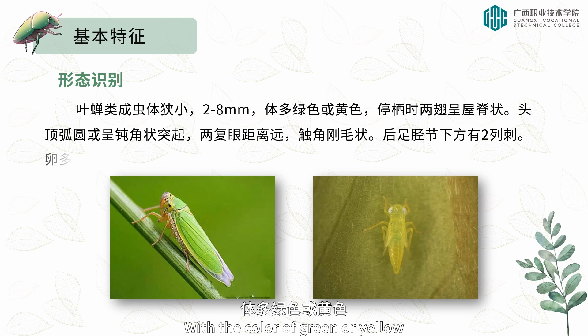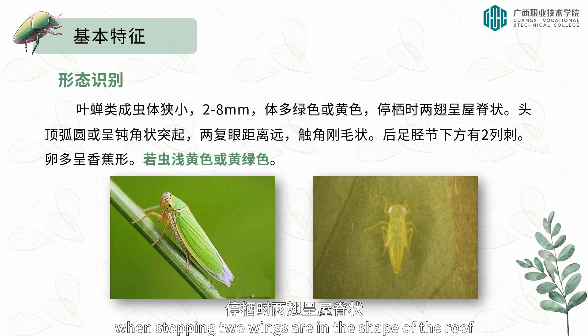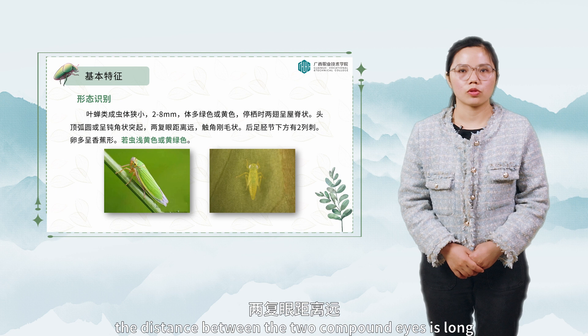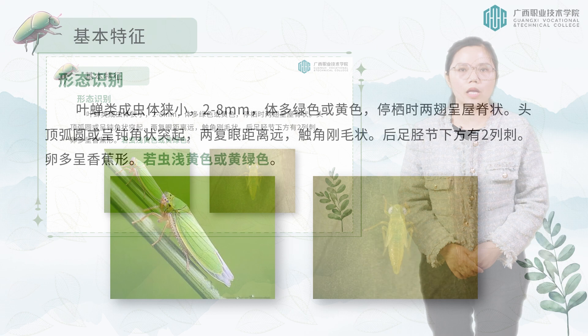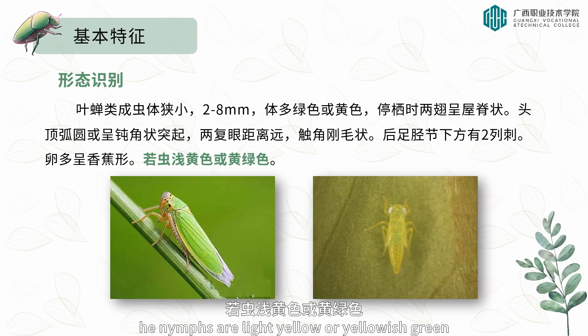The leafhopper adult's body is narrow, only two to eight millimeters in length, with a color of green or yellow. When resting, the two wings are in the shape of a roof. The top of the head is curved or obtusely angled, and the distance between the two compound eyes is long. The antennae are bristly.